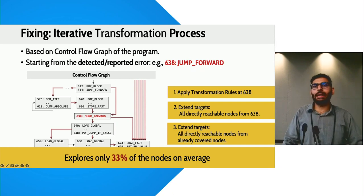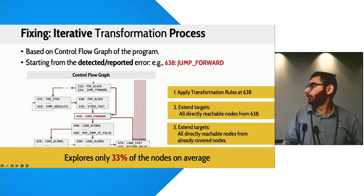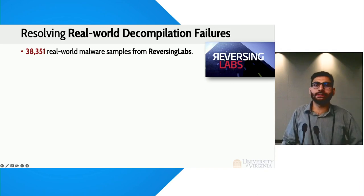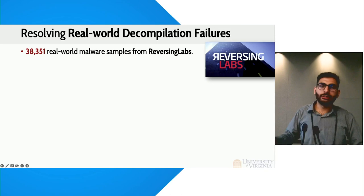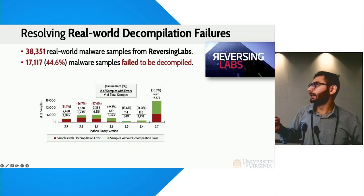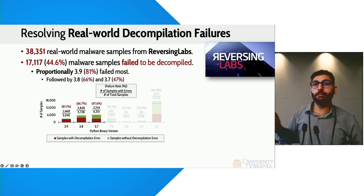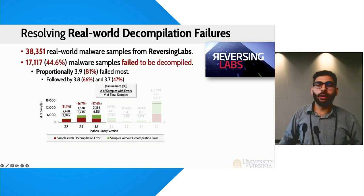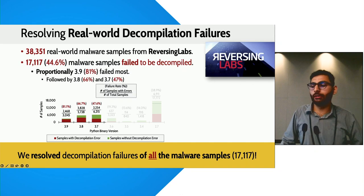We then measured the impact by collaborating with Reversing Labs and obtaining more than 35,000 malware samples. We decompiled them and found 44.6% were failing. Interestingly, later Python versions were failing more proportionally, showing that decompilers are struggling with newer Python versions. Overall, we applied our approach and were able to resolve all of these errors.